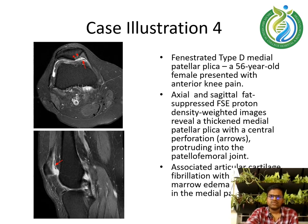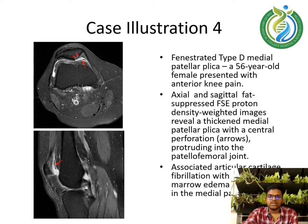Case illustration 4 demonstrates a fenestrated type D medial patellar plicae. A 56-year-old female presented with anterior knee pain. Axial and sagittal fat-suppressed FSE proton density weighted images reveal a thickened medial patellar plicae with a central perforation protruding into the patellofemoral joint. Associated articular cartilage fibrillation with subchondral marrow edema is shown by the arrowheads in the medial patella.